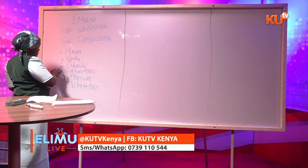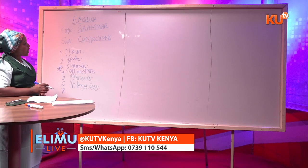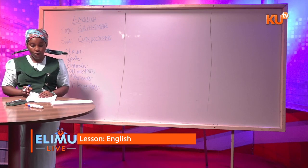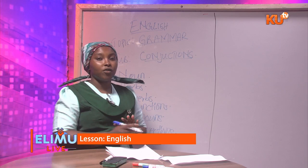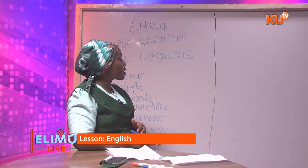Conjunctions are very important in grammar because they help us to know how different parts of sentences are linked together. In English, a conjunction is a word or a pair of words that connects sentences, or connects words, phrases, or clauses.